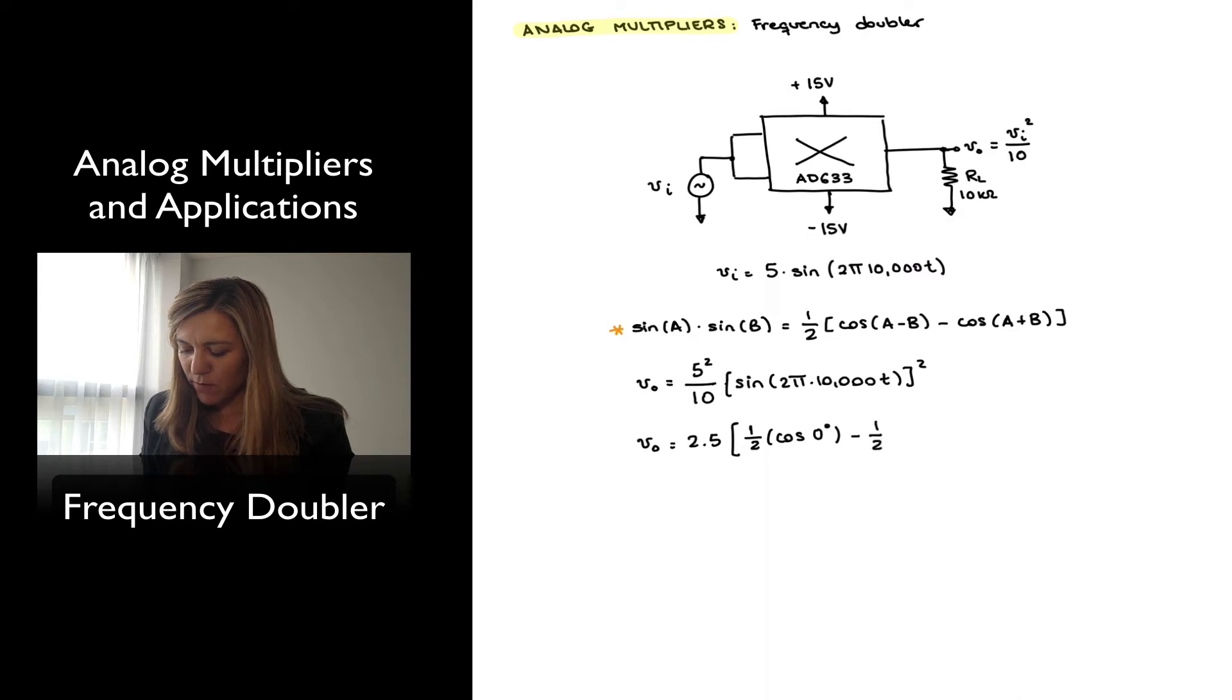Minus one-half of the cosine of 10,000 plus 10,000, which is 20,000. So 2π times 20,000 times t. And so essentially here is my component with a frequency twice the input frequency.